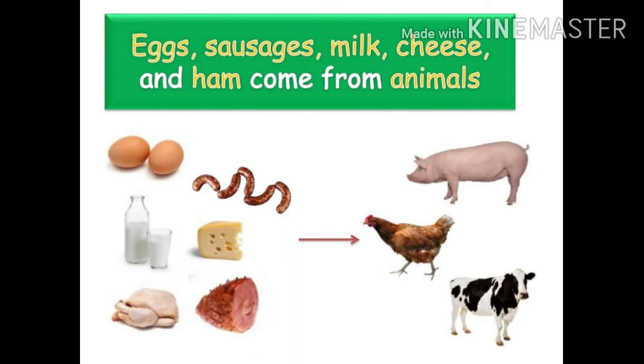Eggs, sausage, milk, cheese and ham come from animals. So these are animal products.